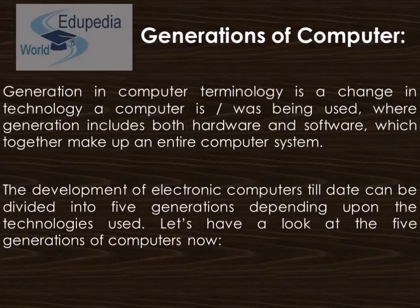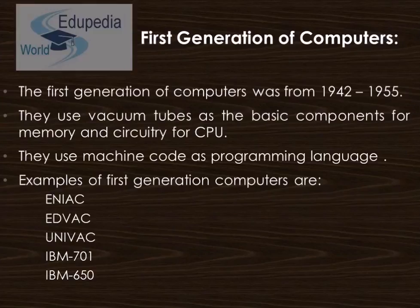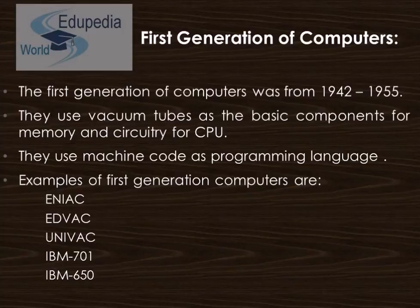The first generation was from 1942 to 1955. They used vacuum tubes as the basic components for memory and circuitry for the central processing unit. Machine language was being used as the programming language. Some examples of that era of computers were the Electronic Numerical Integrator and Computer and the Electronic Discrete Variable Automatic Computer.